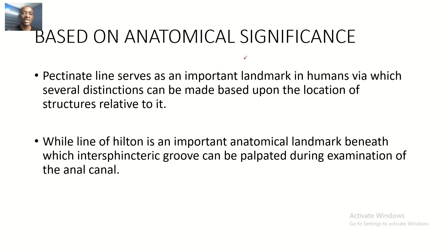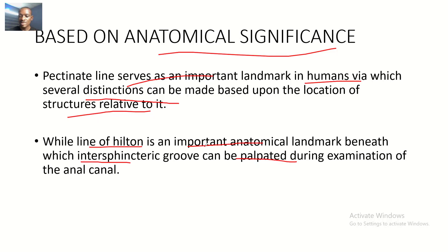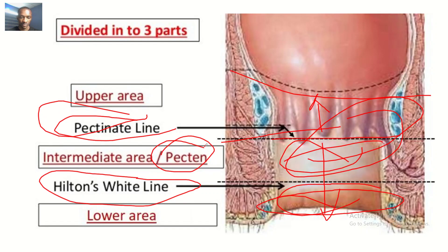Now, based on anatomical significance: the pectinate line serves as an important landmark in humans, from which several distinctions can be made based on the location of structures related to it. The white line of Hilton is an important anatomical landmark beneath which the intersphincteric groove — the groove between the external anal sphincter and the lower part of the internal anal sphincter — can be palpated during examination of the anal canal.